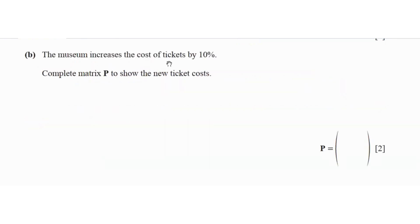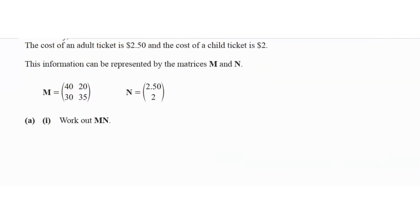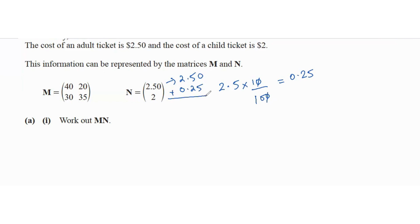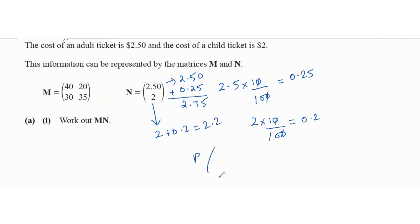The museum increases ticket costs by 10%. Going back to matrix N, find 10% of 2.5: that's 0.25, so the new price is 2.5 plus 0.25 equals 2.75. Then 10% of 2 is 0.2, so the new price is 2 plus 0.2 equals 2.20. Therefore matrix P is [2.75, 2.20].